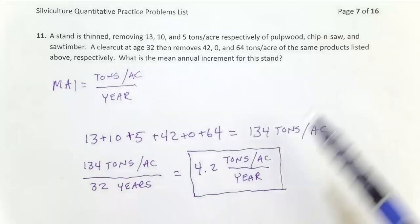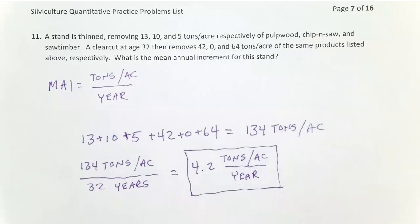In this particular stand, maybe it wasn't a good site, maybe our silviculture wasn't great, maybe genetics weren't great, maybe a combination of all those factors, maybe there were insect and disease issues. This is kind of below average for what you'd be hoping for. So that's mean annual increment.